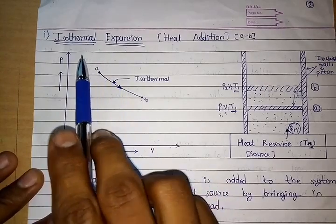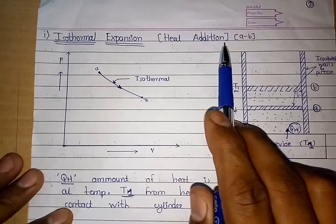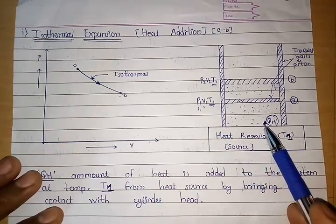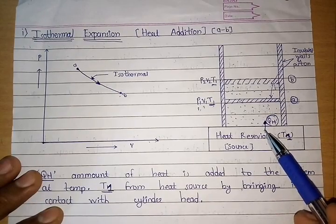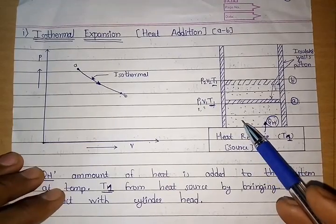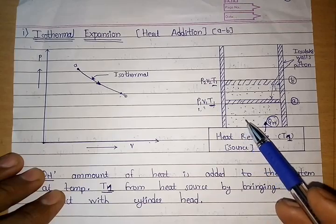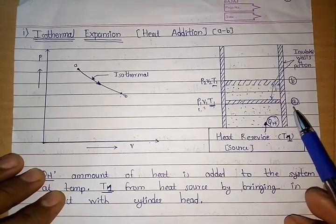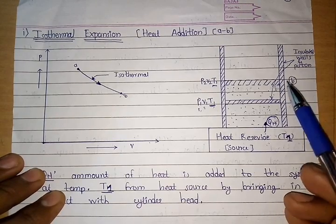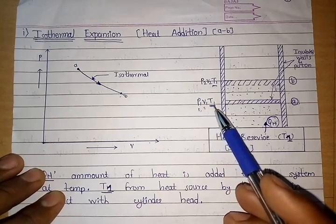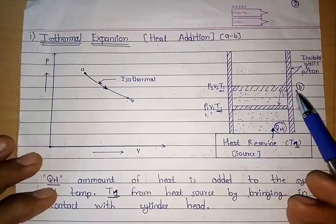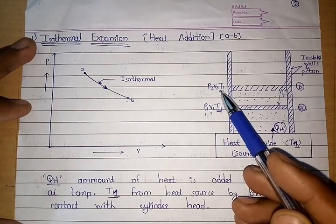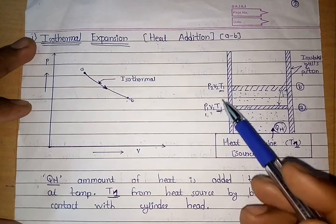The first process in the Carnot cycle is isothermal expansion, in which heat addition takes place. The hot heat reservoir is brought into contact with the cylinder head, and it starts transferring QH amount of heat to the gas. As the gas receives heat from the reservoir at temperature T1, it starts expanding from piston position A to B. At position A: pressure P1, volume V1, temperature T1. At position B: pressure P2, volume V2, temperature T1 (isothermal, so temperature remains T1).